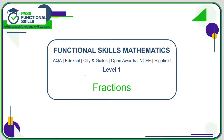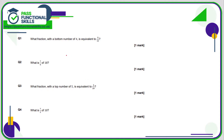Let's take a look at the fractions questions — all of these questions are non-calculator. Question one: what fraction with a bottom number of four is equivalent to nine twelfths? We write nine twelfths and want an equivalent fraction with a denominator of four. What do you do to turn a 12 into a 4? You divide by three. For an equivalent fraction, if you're dividing the bottom by three you also divide the top by three. Nine divided by three is three, so three quarters is the same as nine twelfths.